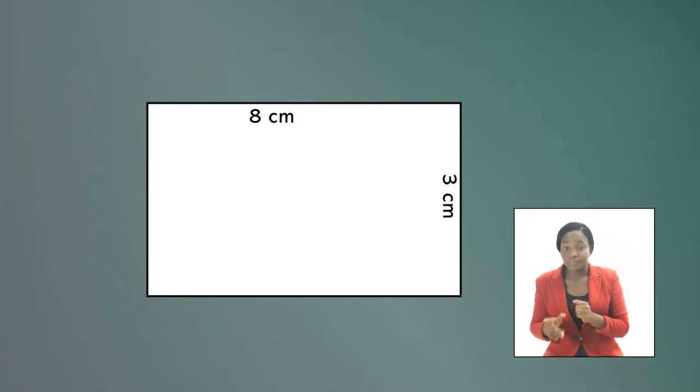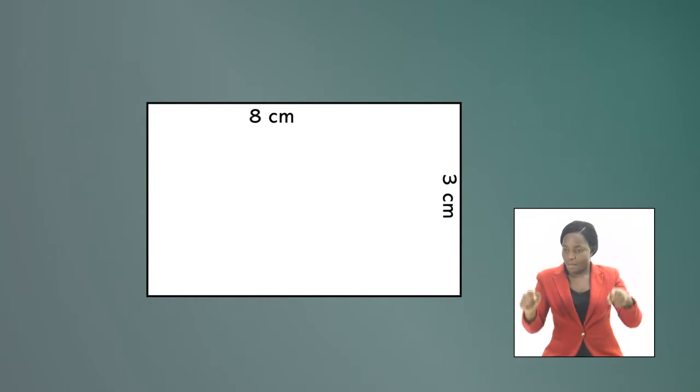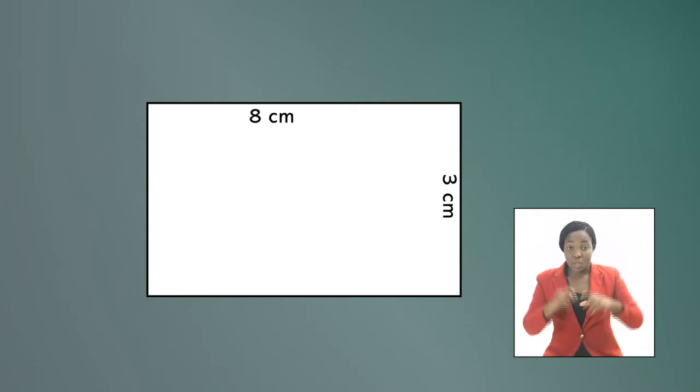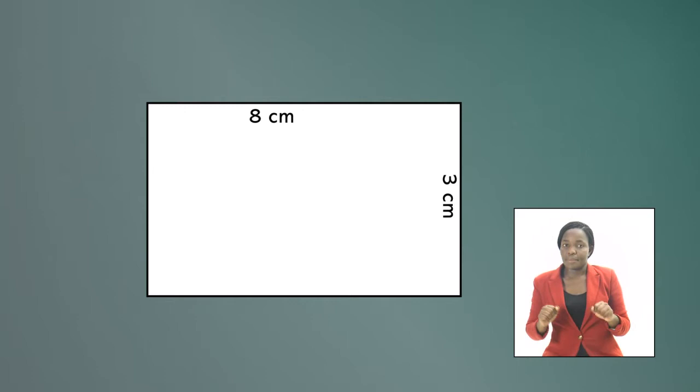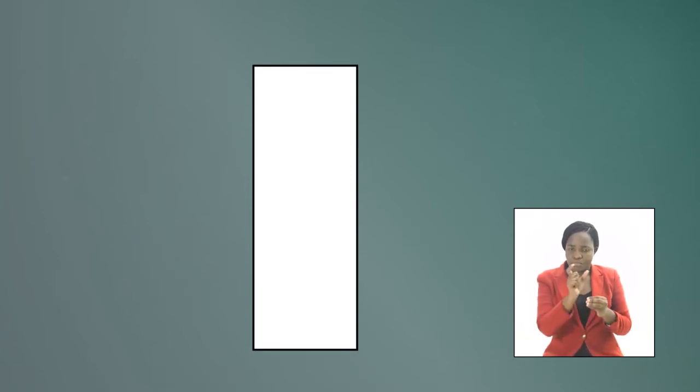According to these instructions, we're supposed to draw a rectangle first with these dimensions: length 8 cm and breadth 3 cm. Here is the rectangle — 8 cm in length and 3 cm in breadth. I measure 8 cm and draw the line, then I measure a 90 degree angle and draw down the line of 3 cm.